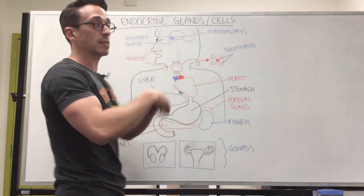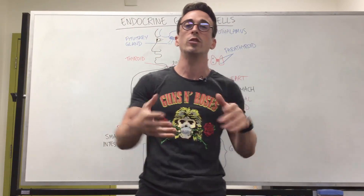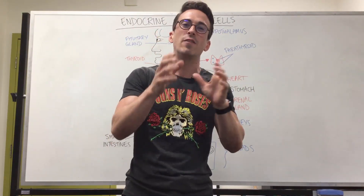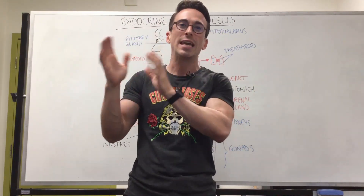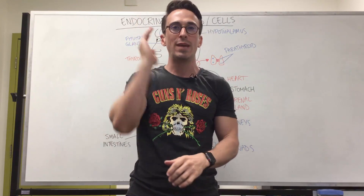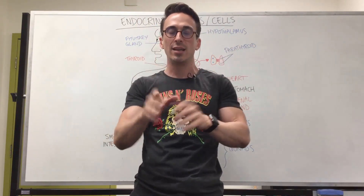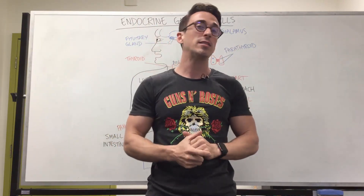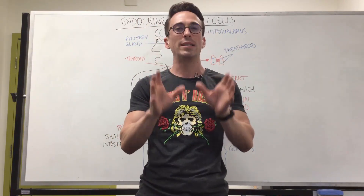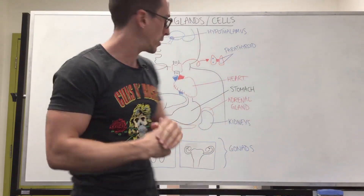The liver itself has a multitude of hormones, one of which is angiotensinogen. If it ends in '-ogen,' it's stored and inactive, so it needs to be activated into angiotensin. Angiotensin plays a very important role in maintaining blood pressure and fluid balance within the body.